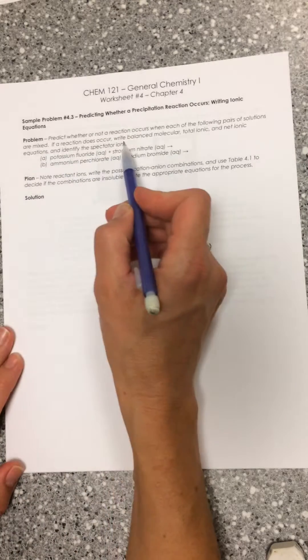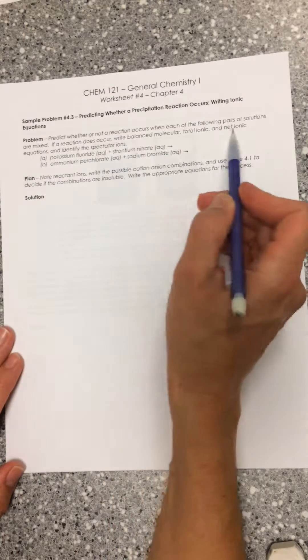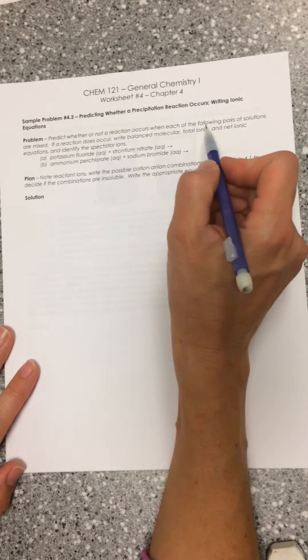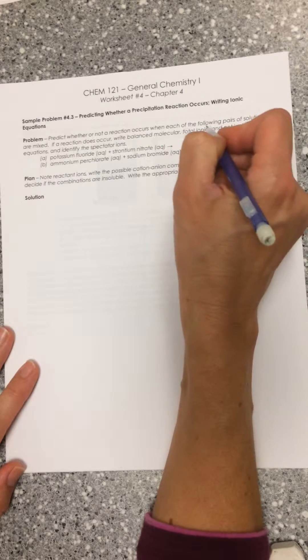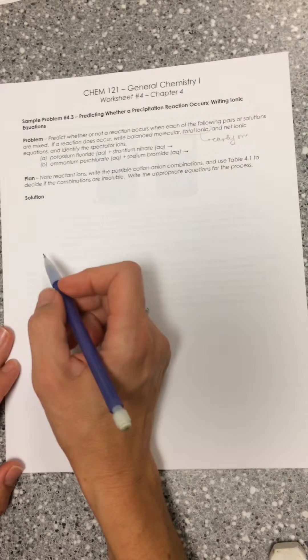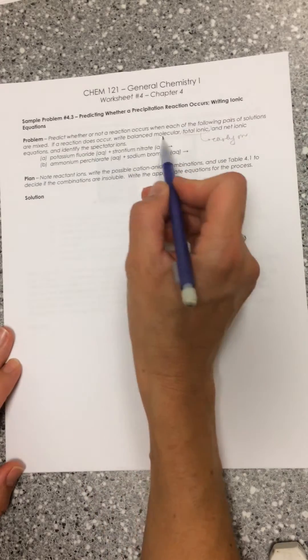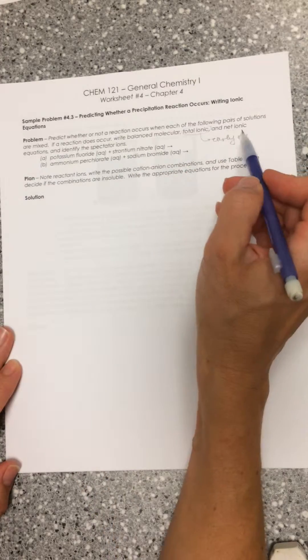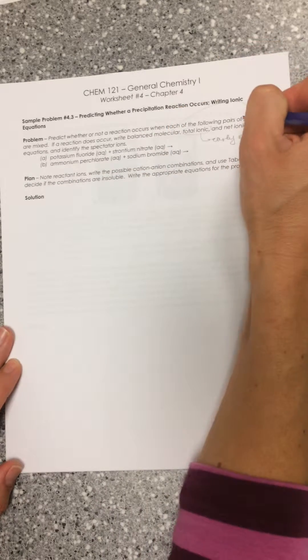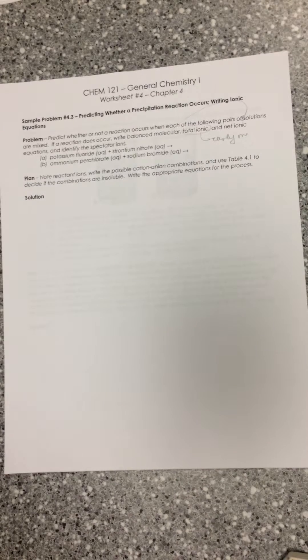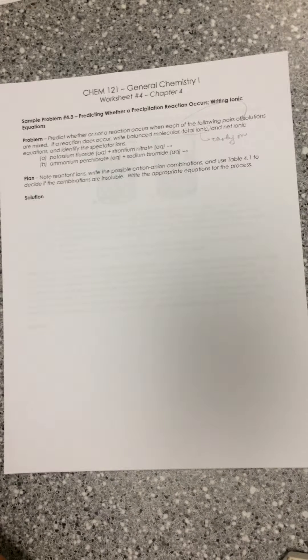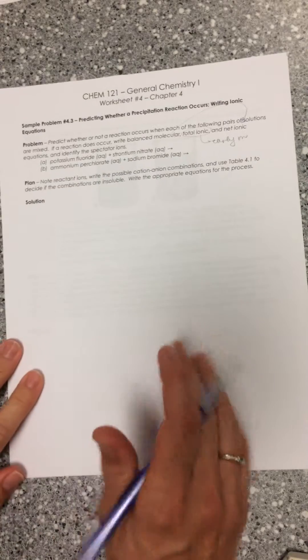If a reaction does occur, write the balanced molecular, total ionic, and net ionic equations, and identify spectator ions. We're going to write total ionic equations early on, and then try to get to the point where we can transition between molecular and net ionic equations without needing to write the very tedious total ionic equation.